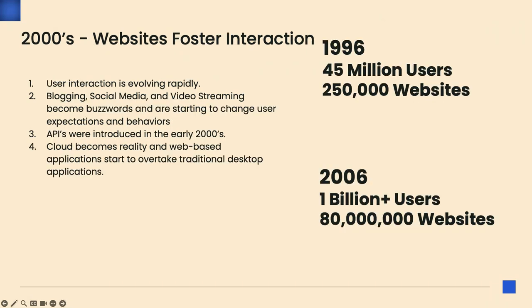Moving into the 2000s, just look at the growth — the explosion of what was there. You went from 45 million users and 250,000 websites to over a billion users and 80 million websites. It was a lot harder to stand out in the 2000s than in 1990. More content, more competition, more noise, harder for people to find what they're looking for. One of the ways to stand out was building user interaction and communities around platforms — that's why you saw the rise of social media and shared content with large groups.